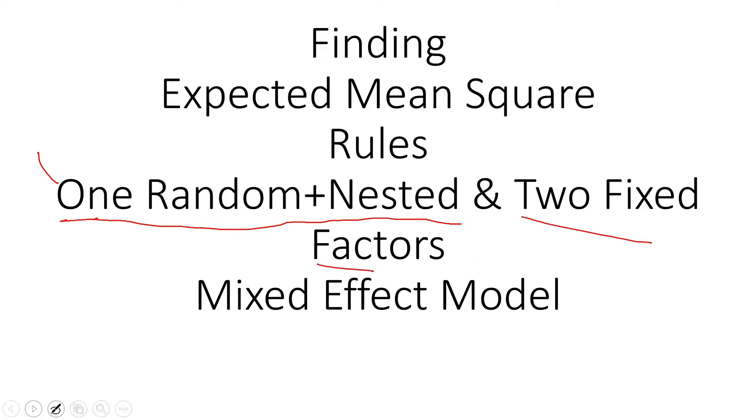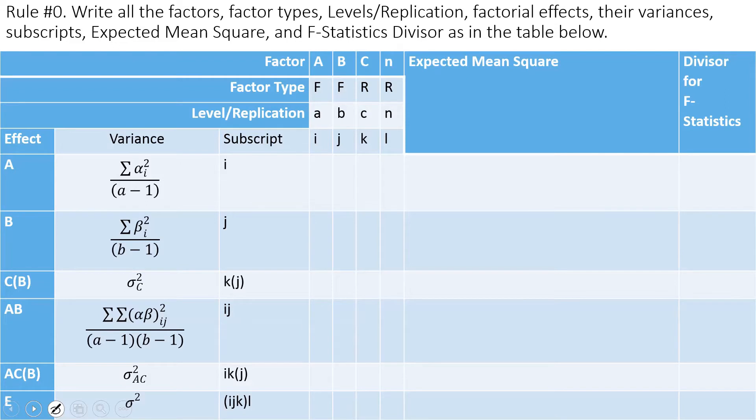Rule number zero is to write down all the effects in column one, then write down the variances in column two, and then subscripts of the effects in column three. Then column four is factor A, column five factor B, factor C, and then the replication. Also, you have to indicate the type of factor—if it's a fixed factor write F, or if it's a random factor type R. Replication is always random. Then there are levels: a is the level of factor capital A, similarly small b is the level of capital B, and so on. Also there are subscripts I, J, K, L.